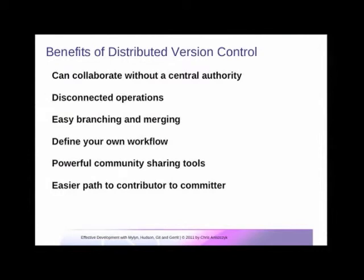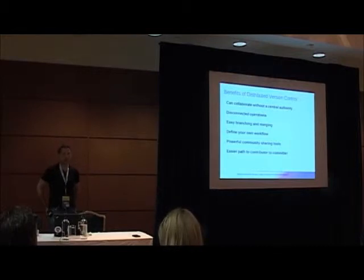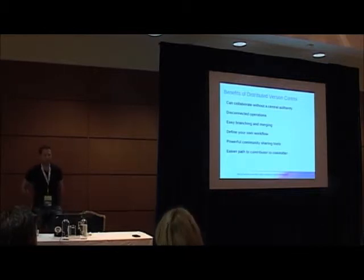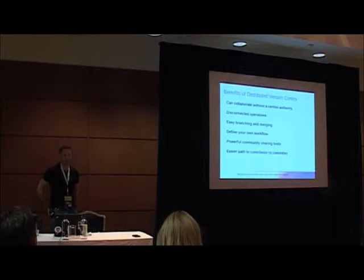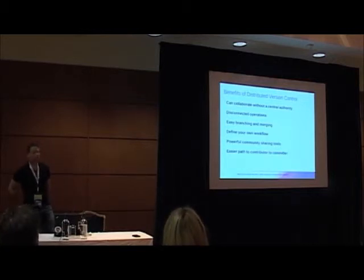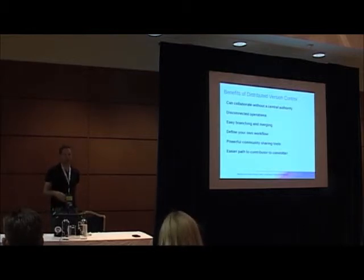There are good reasons why DVCS adoption is the case. In the open source world, you can collaborate without any central authority — there's no main server you have to deal with. It's easier to share your changes with colleagues. For me, as someone who travels quite a bit, there's the advantage of disconnected operations: when I'm on an airplane without Wi-Fi, I can do all my work, commit my changes, and get a lot done, then share those changes once I'm online. One of the biggest advantages is the easy branch merging — you can cherry-pick changes and grab changes between branches easily. Systems like Git and Mercurial also make it very easy to define your own workflow, depending on whether you have a small or large project, and there are powerful community sharing tools.